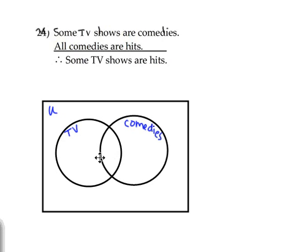So I'm going to start out drawing that first premise. For some TV shows to be comedies, we need overlapping circles. You can see that this will show that some TV shows are comedies. We have some that are falling on the outside, so it also shows that some TV shows are not comedies. But for some, you need overlapping circles.